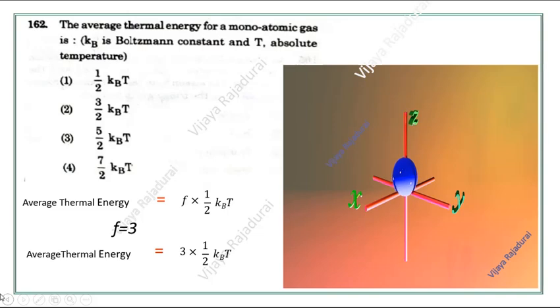So, 3 times 1 by 2 KbT. The answer is 3 by 2 KbT. Option 2 is the correct answer for this question. Thank you.